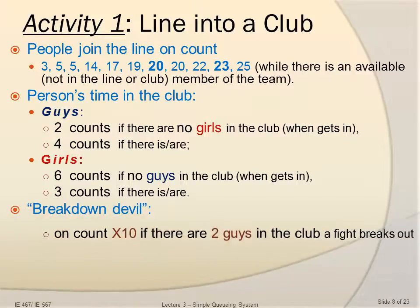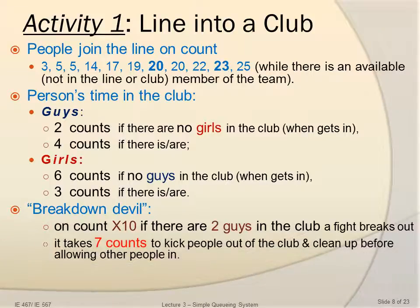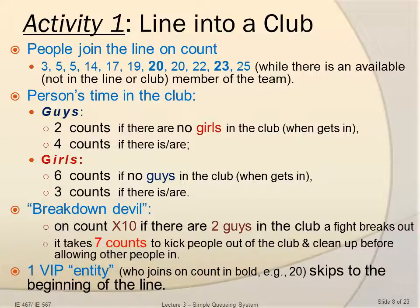There will be a breakdown event if on a count that is a multiple of 10 — for example, 10, 20, 30 — there are two guys in the club, so a fight breaks out and it takes seven counts to kick people out and clean up before allowing new people in. Also, there will be a VIP entity who joins on a count in bold, for example 20 or 23. That VIP entity will skip to the beginning of the line.